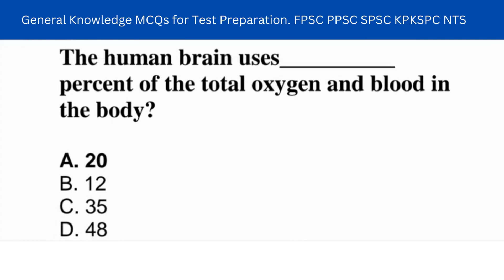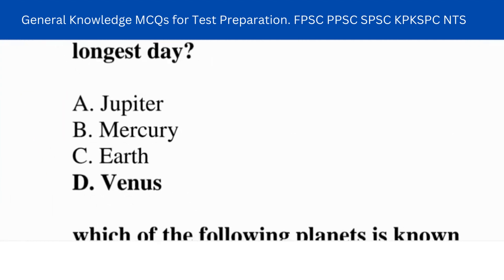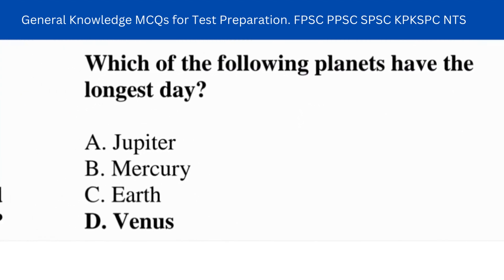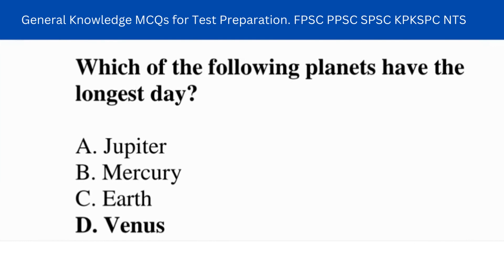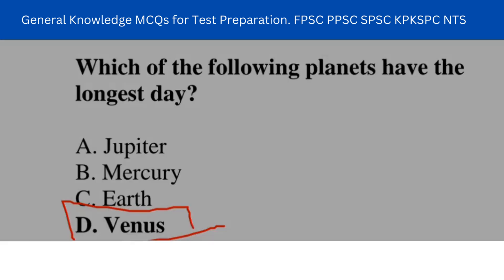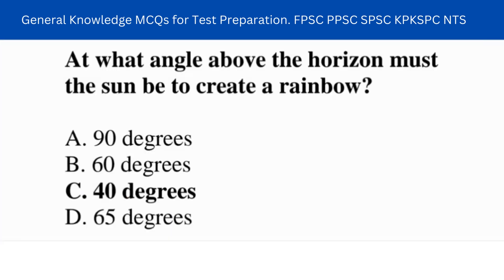Answer: twenty percent. Next question: which of the following planets has the longest day? Answer: Venus. Next question: at what angle above the horizontal must the Sun be to create a rainbow? Answer: 40 degrees.